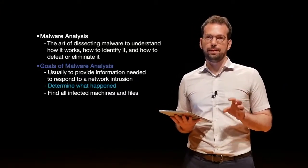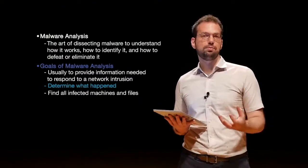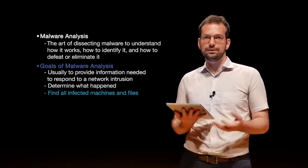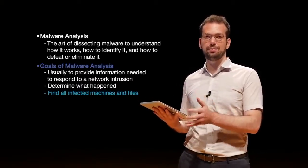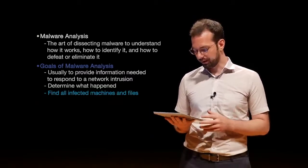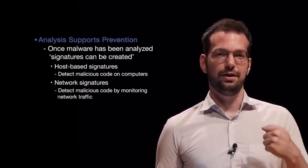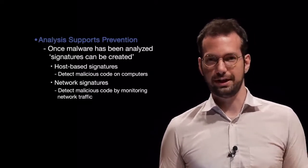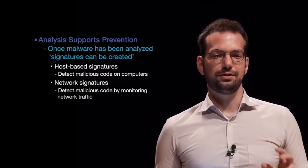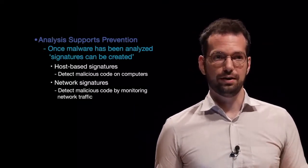We also want to determine what happened — was information already leaked? What kind of information was it looking for? Do we have that information? Is it important to us? That helps determine how bad the situation is. We want to find all infected machines and files, clean them up, and make sure they're not reinfecting systems or leaking information to the outside. Analysis also supports prevention — we do malware analysis to get information that lets us prevent the attack from happening again or prevent further attacks from spreading. Once malware has been analyzed, signatures can be created that let us identify what malware patterns look like.